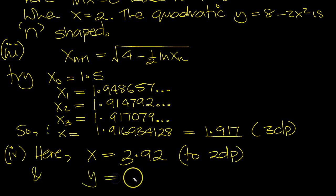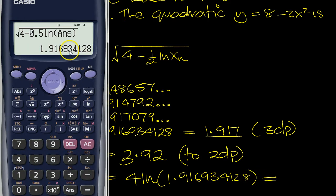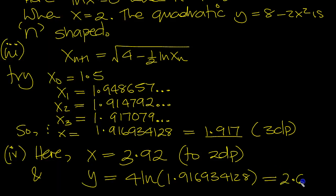And y equals—the y value will be 4 times the log of the original height, which was at 1.916934128. So it's 4 times ln of the answer: 2.60 to 2 decimal places. The x was shifted over, and the original height was stretched up by a factor of 4, which works out to 2.60 to 2dp.